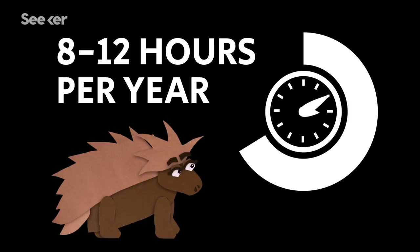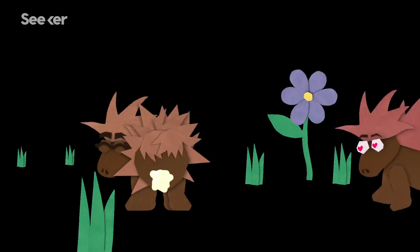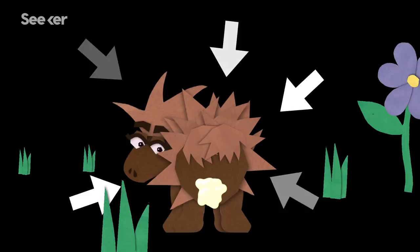Female porcupines are only fertile and interested in sex for about 8 to 12 hours per year. The rest of the time their vaginas are sealed up by a membrane in order to stave off unwanted action. As if having a body covered in protruding spines isn't enough.